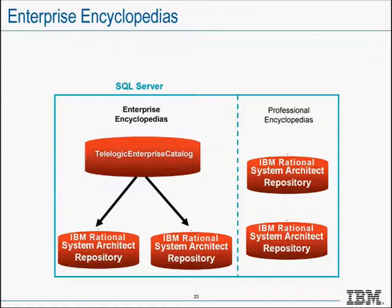Professional encyclopedias may only be shared among System Architect clients. In a System Architect XP deployment, you will always require an enterprise encyclopedia. If you're configuring System Architect XP into an existing System Architect deployment, it's possible that the only encyclopedias available at that time are professional, meaning you will be required to create and configure new enterprise encyclopedias within your SAXT deployment environment.